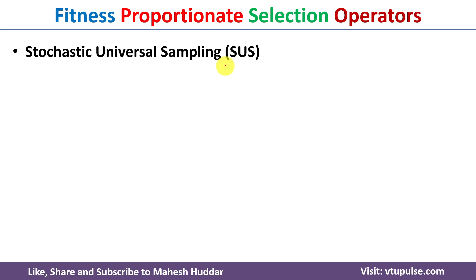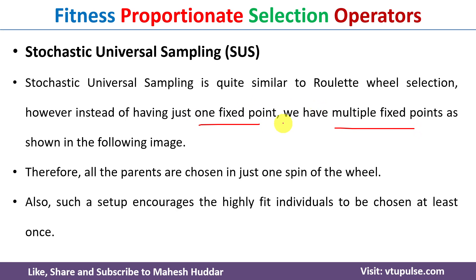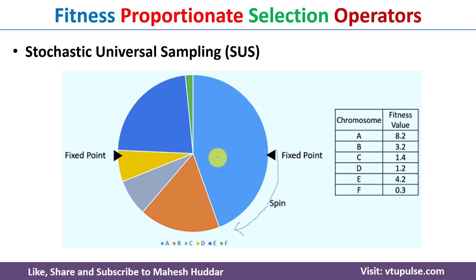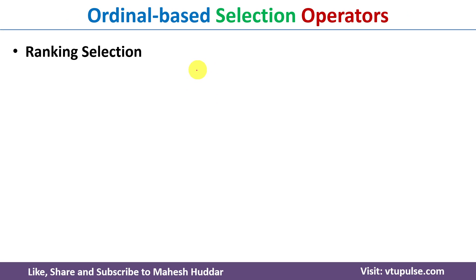The second fitness-based technique is stochastic universal sampling, which is almost similar to roulette wheel selection. Instead of having one fixed point, we have multiple fixed points as shown in the diagram. This allows us to select multiple parents at one time. There is also a better chance that each chromosome is selected at least once. With roulette wheel selection, the chromosome with the highest fitness can be selected many times repeatedly, but stochastic universal sampling ensures even the lowest fitness chromosome also gets selected — that is its key advantage.